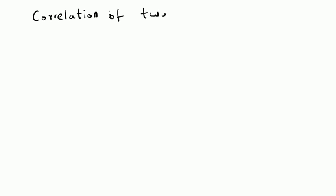Hello, welcome. In this short video, let us look at the correlation property of the Z-transform. We will look at the equivalent operation to correlation in time domain — that is, the correlation of two sequences — and we will define the equivalent operation in the Z-domain.